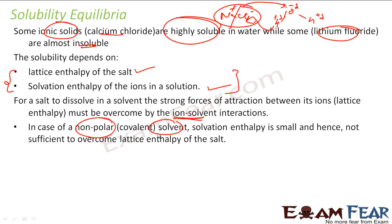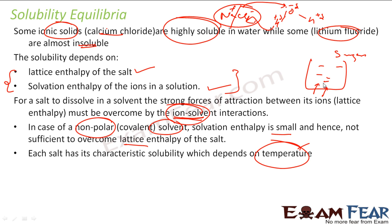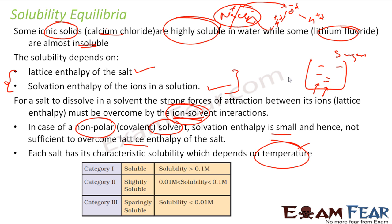In a non-polar solvent, the solvation enthalpy is small and hence not sufficient to overcome the lattice enthalpy. That's why polar solvents dissolve ionic solids but non-polar solvents do not. Solubility also depends on temperature — for example, if you heat water with sugar, more sugar dissolves, and when you cool it down, sugar crystals come out.